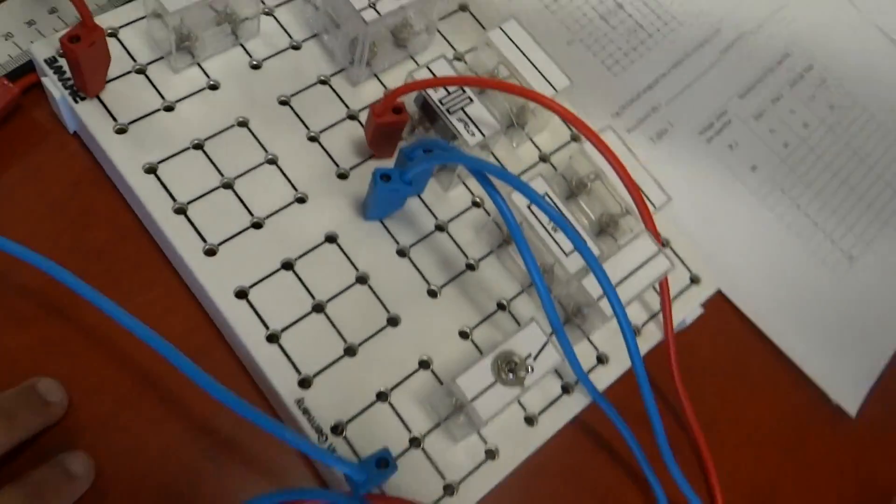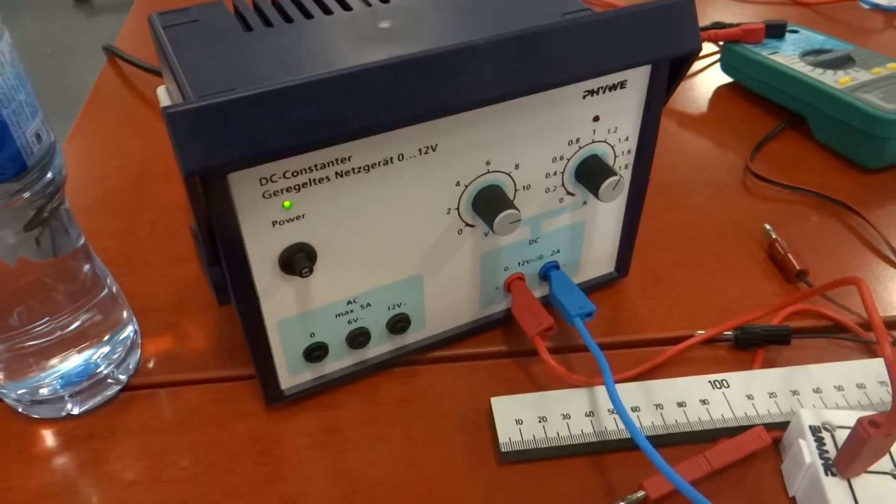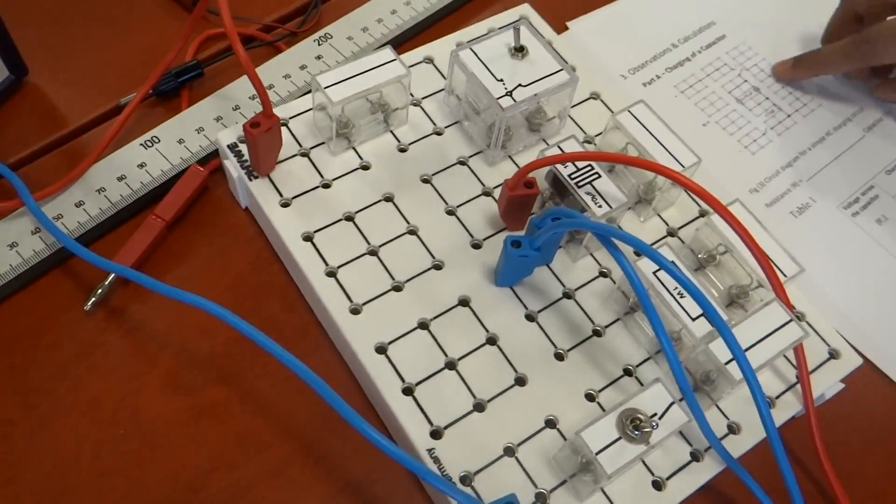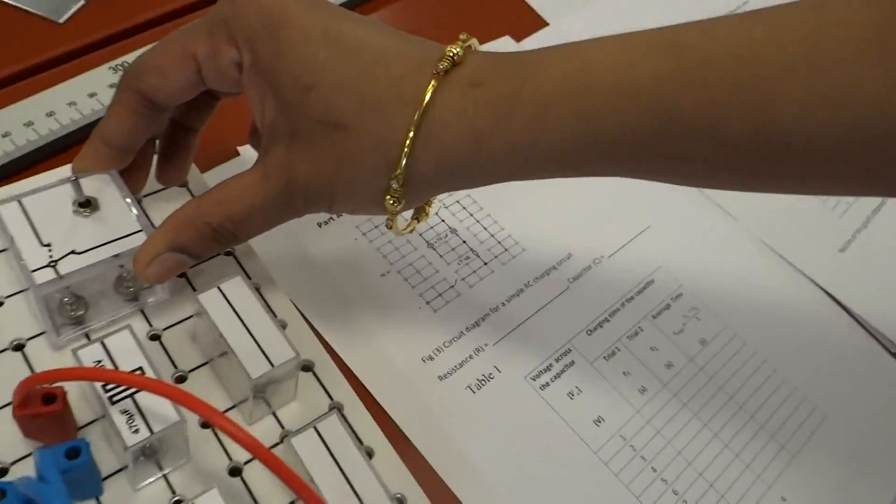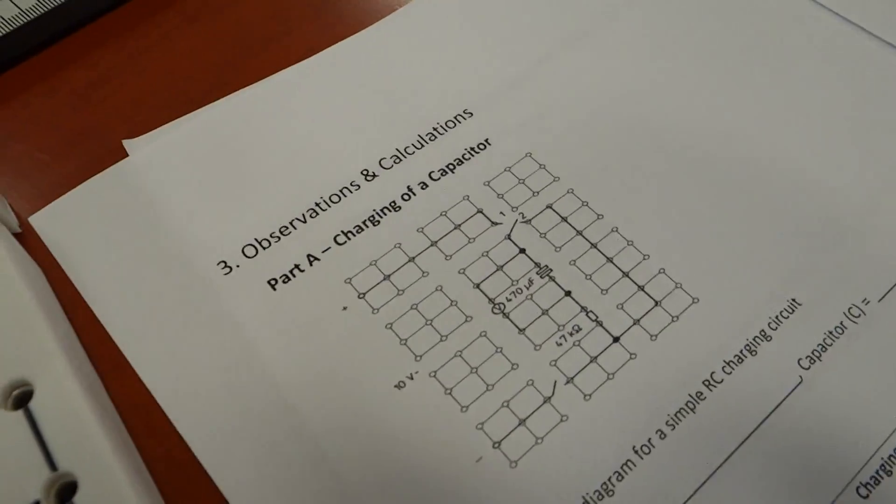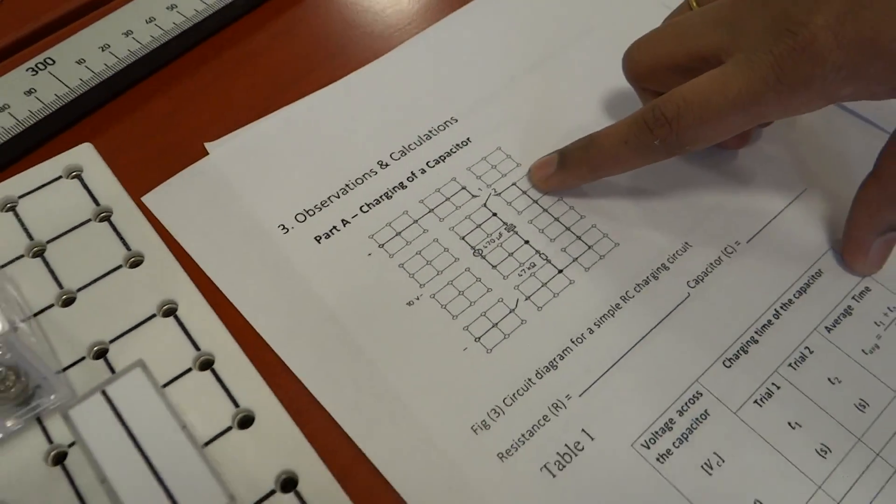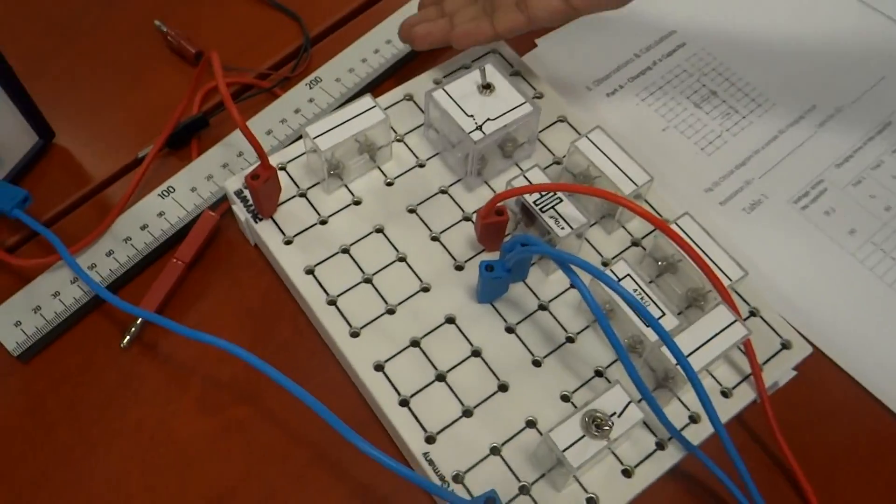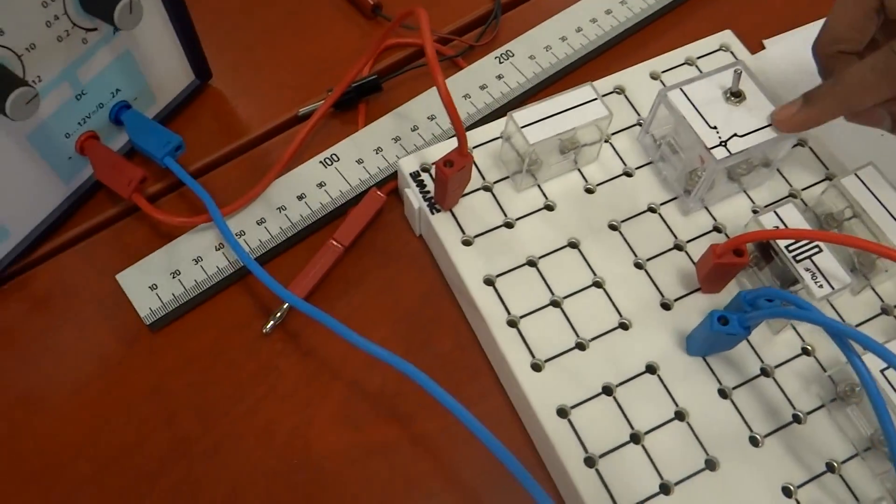10 volt DC is given from the power supply. From the positive, there is a connection and there is a 3-leg key. This is a special key for changing it as a charging and discharging circuit. Position 1 means charging circuit. Position 2, this side, it is discharging circuit.